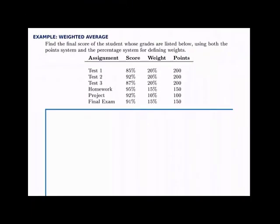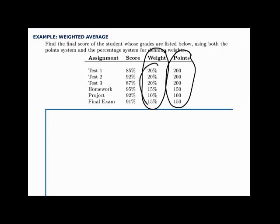Here we'll find a weighted average using a student's score in a class. We have several assignments: three tests, homework, a project, and a final exam. We're given the student's score on each assignment as well as a weight and a number of points for each. Notice that there are a total of 1,000 points they could earn, and if you divide each point value by 1,000 you get the percentages listed as weights. The same information is given in the weight column or the points column — it's just written differently. We'll show the calculation both ways, but we'll get the same answer either way.